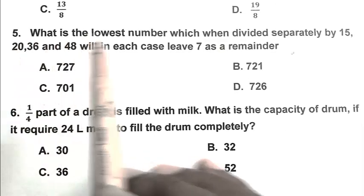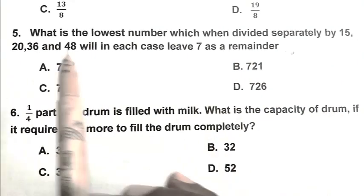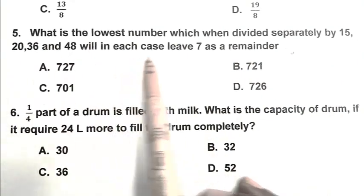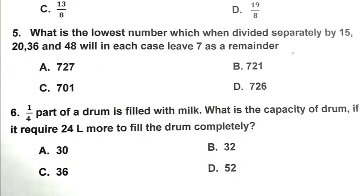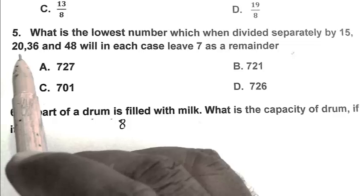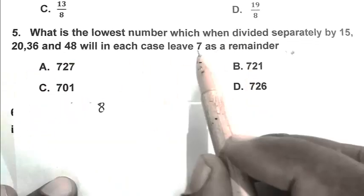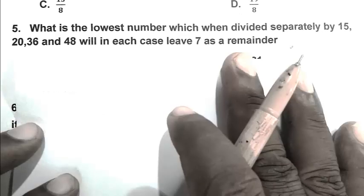Question number 5: What is the lowest number which when divided separately by 15, 20, 36 and 48 will in each case leave 7 as remainder? We first calculate the LCM of 15, 20, 36 and 48, then add 7.